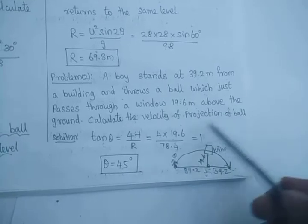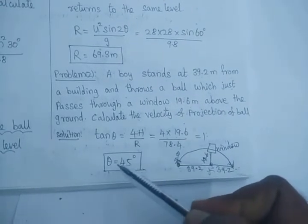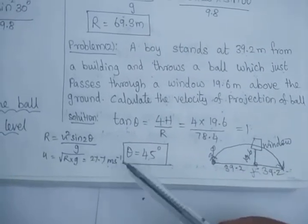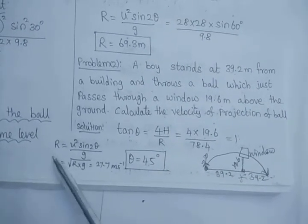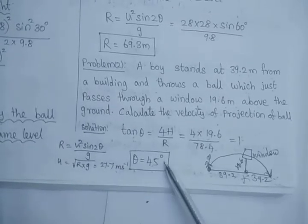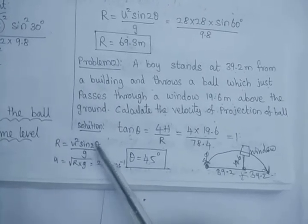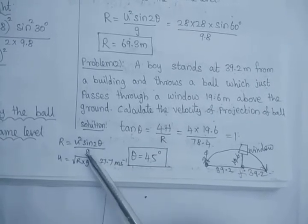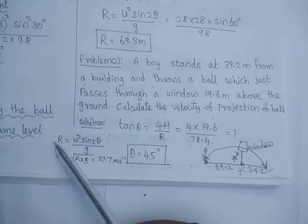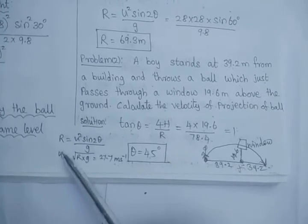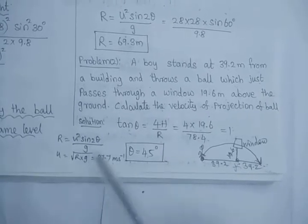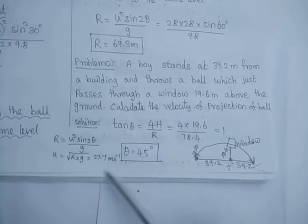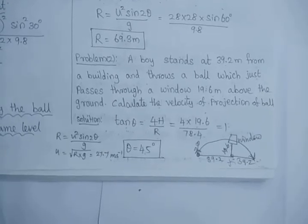To calculate the velocity of projection, we use R = u² sin2θ / g. Substituting θ = 45°, sin 90° = 1, so R = u² / g. Rearranging, u = √(R × g). Substituting R = 78.4 and g = 9.8, we get an answer of 27.7 meter per second.